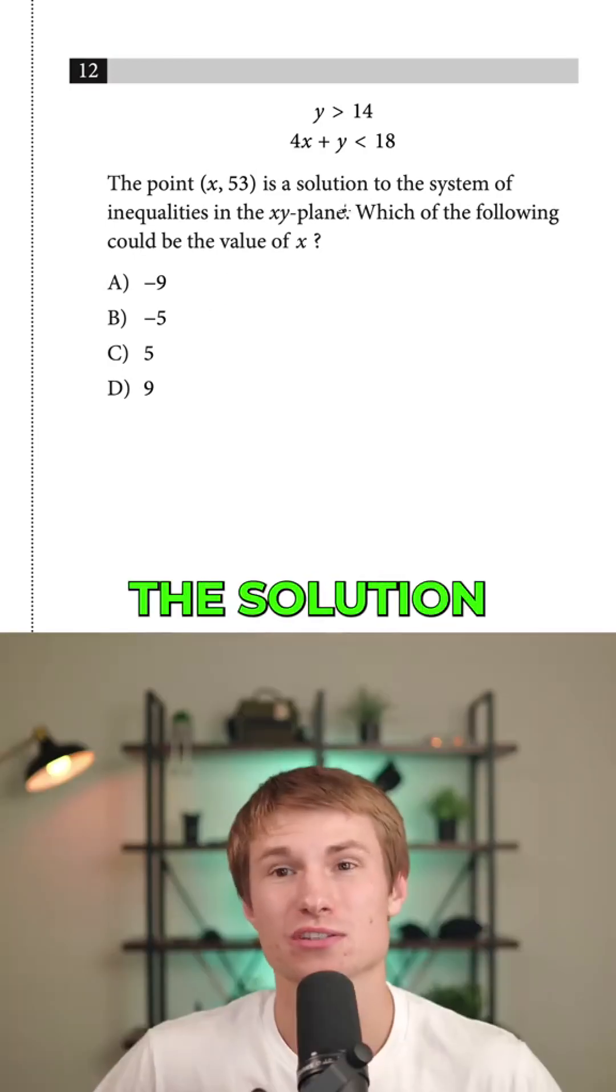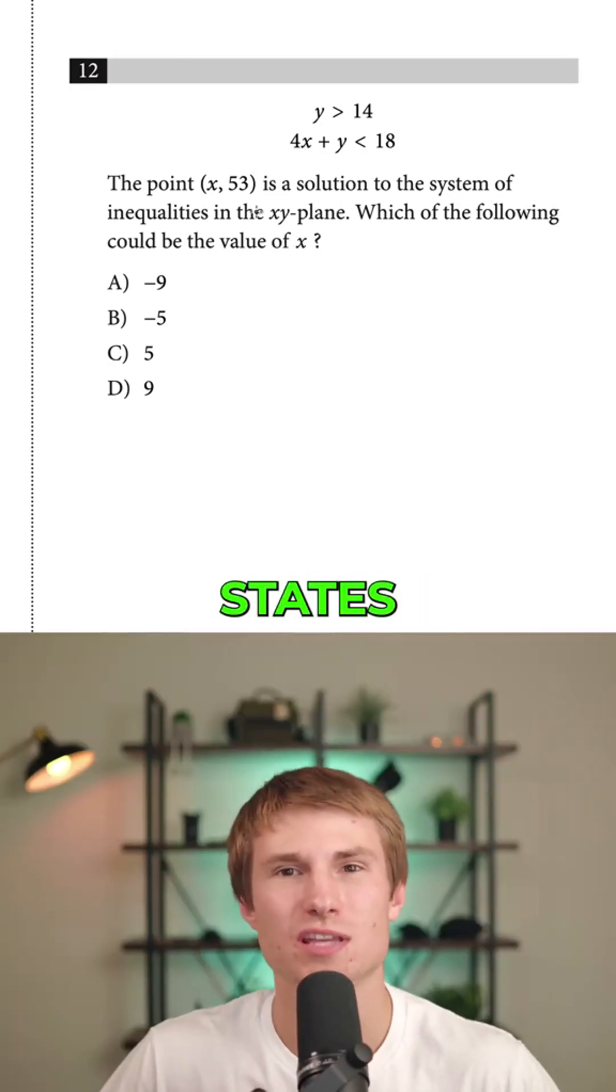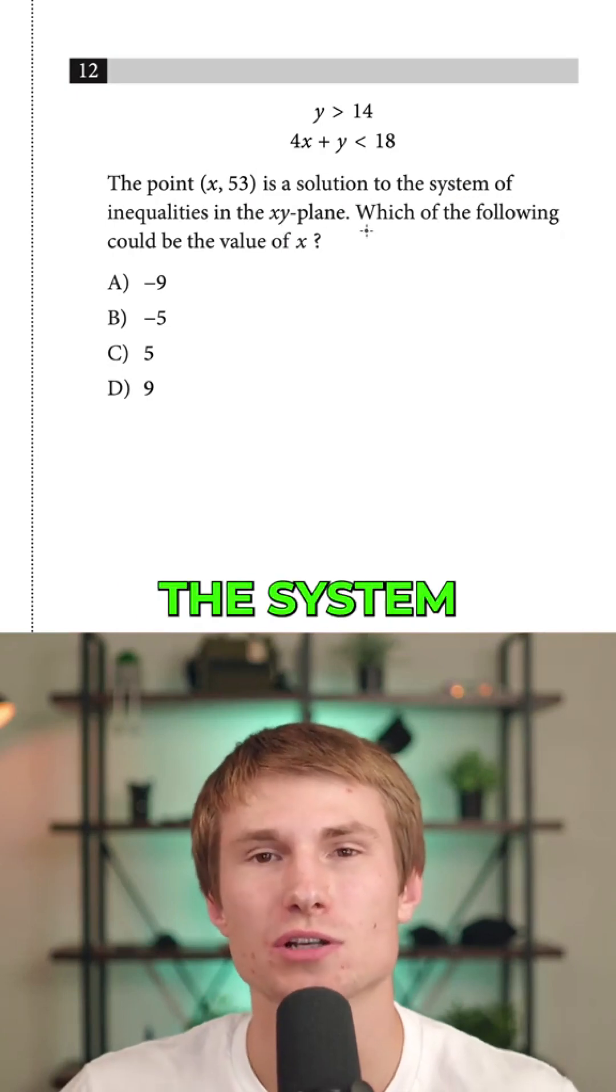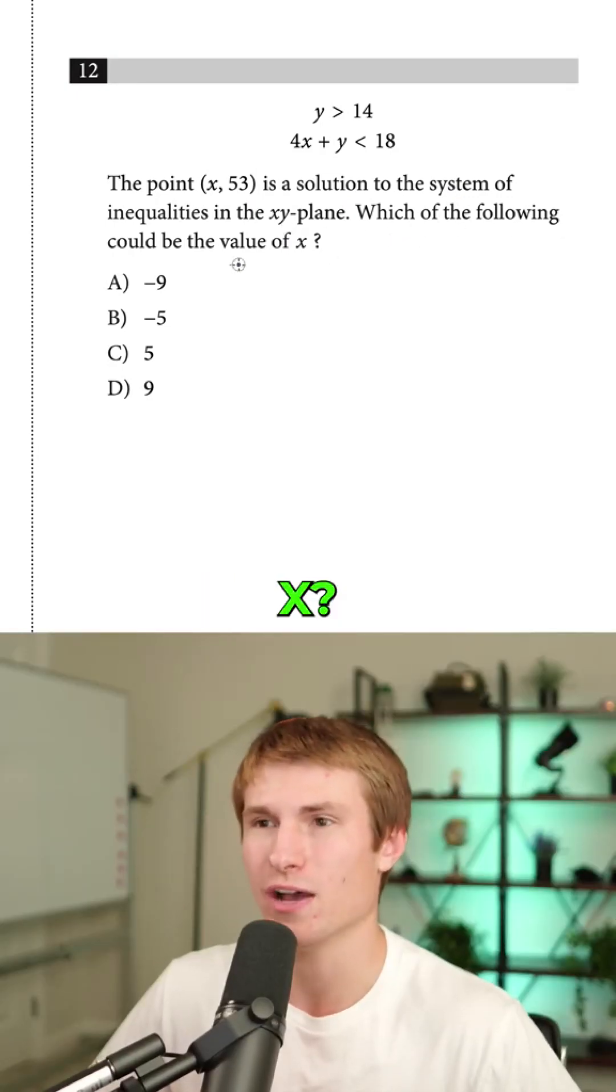Here's how to solve this SAT math question about the solution to a system of inequalities. The question states the point (x, 53) is a solution to the system of inequalities in the xy plane. Which of the following could be the value of x?